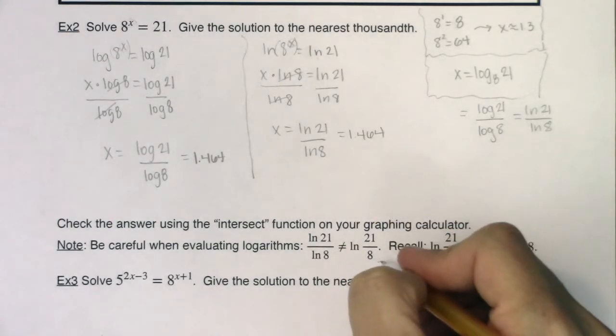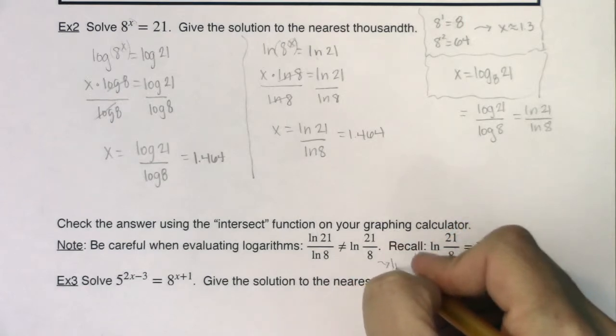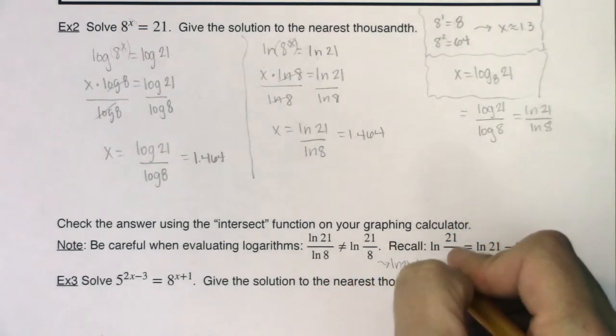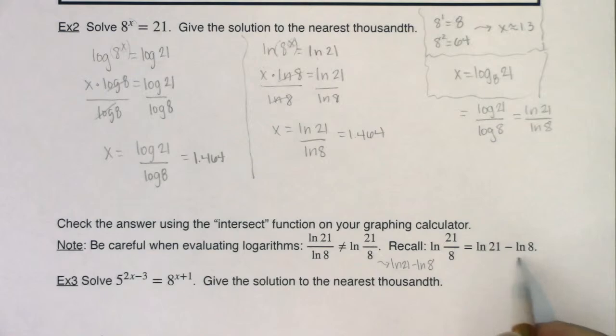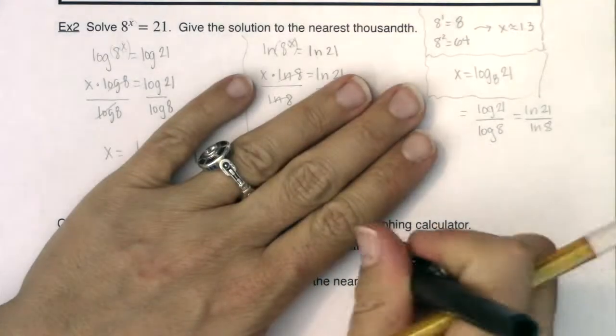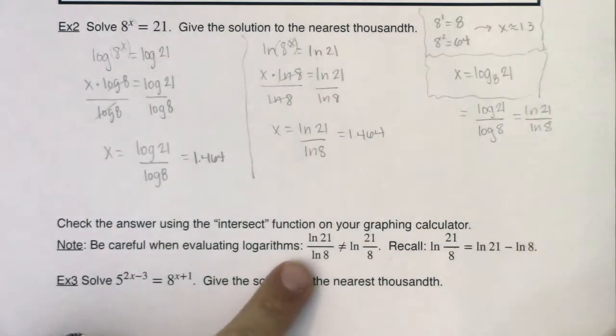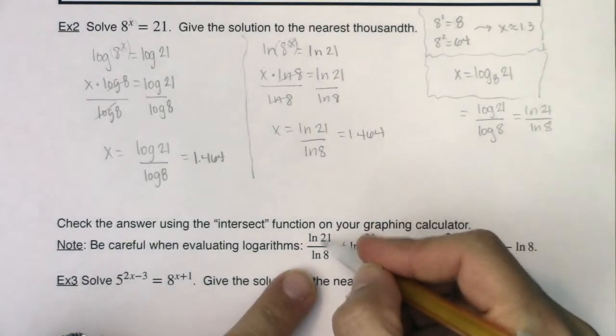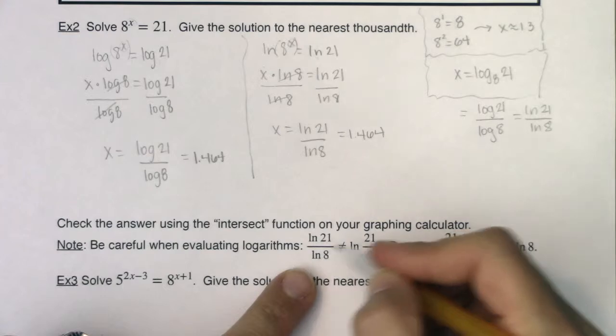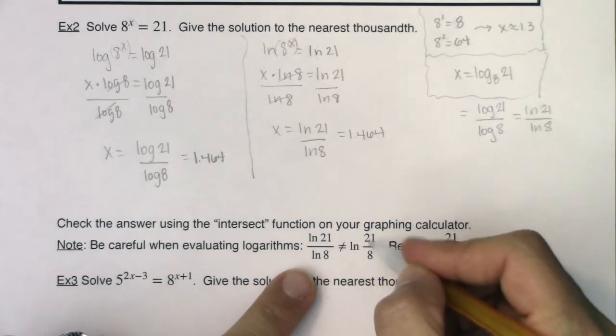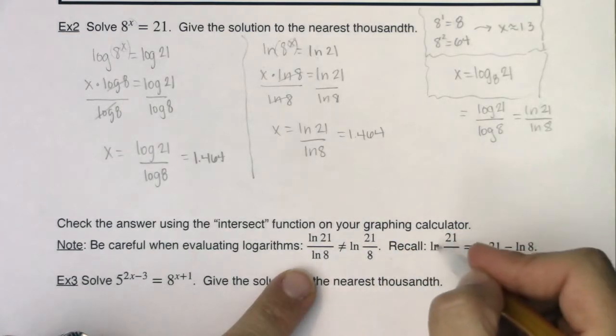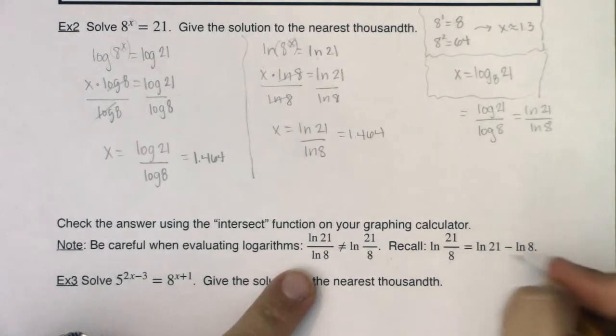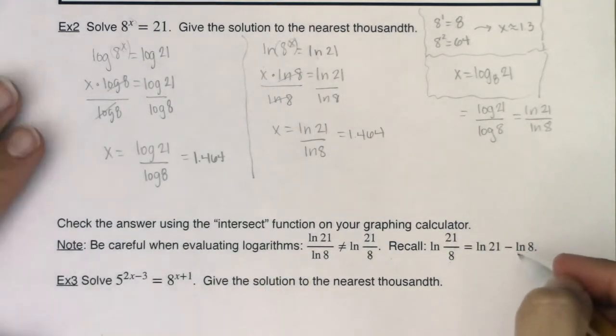If you'll recall from the last section, ln of 21 over 8 is ln of 21 minus ln of 8. Right. ln of 21 eighths is ln of 21 minus ln of 8. So I don't want you to think that you can take two logarithms that are in ratio to one another and make it the natural logarithm of the ratio of their arguments. Because when you have a natural log of a fraction, you have to use subtraction to subtract those exponents. So let's check this on our calculator.